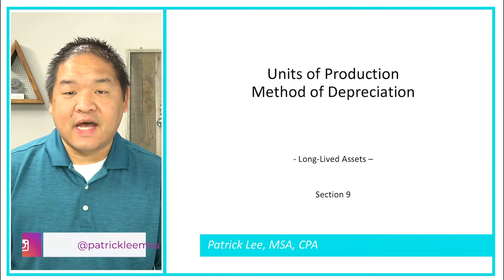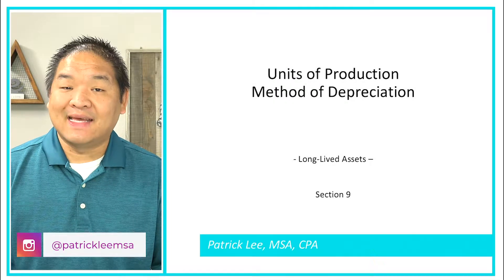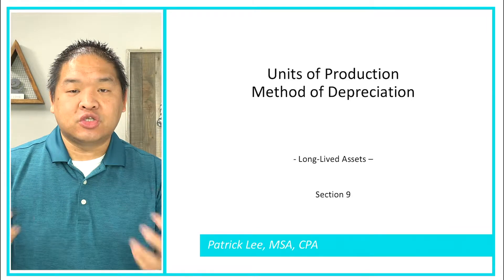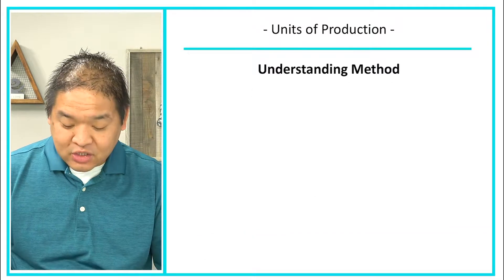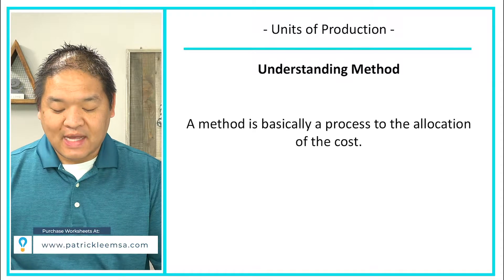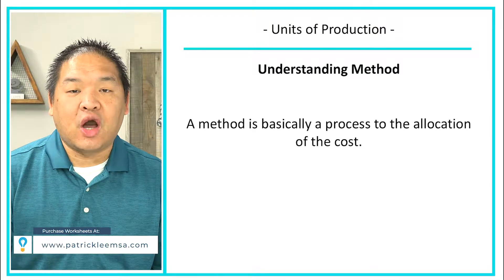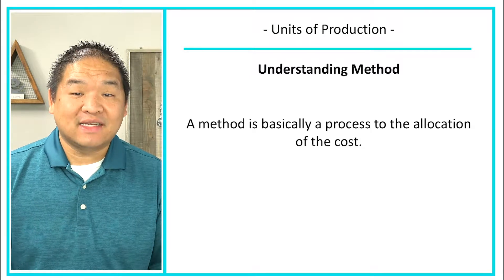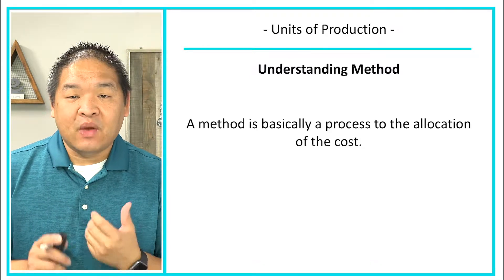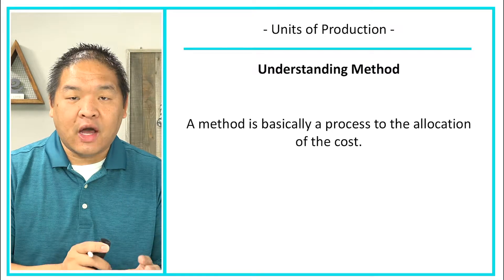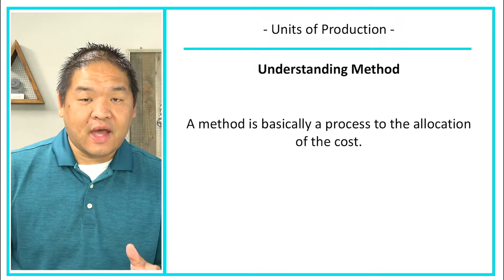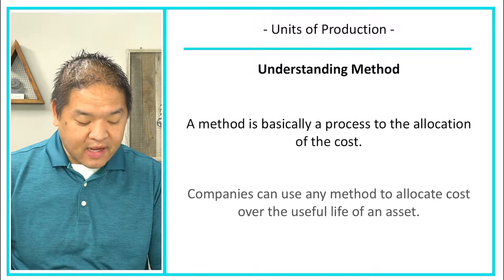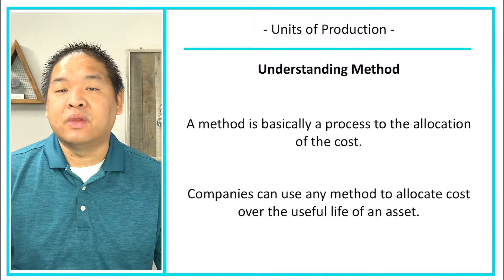In this lesson, we're going to be looking at the units of production method of allocating depreciation. A method is basically a process for allocating cost — the capitalized cost of our long-lived asset. We need a method to allocate that cost over the useful life of the long-lived asset as an expense. Companies can use any method that they would like.